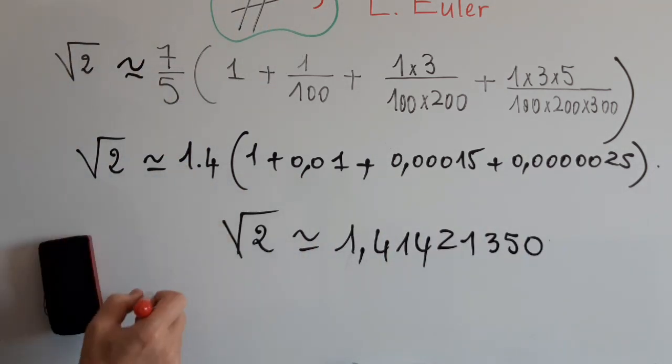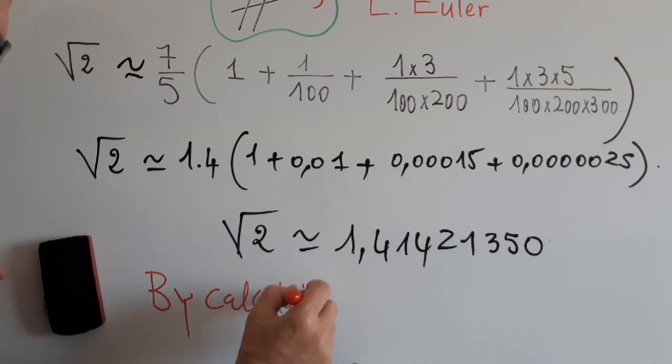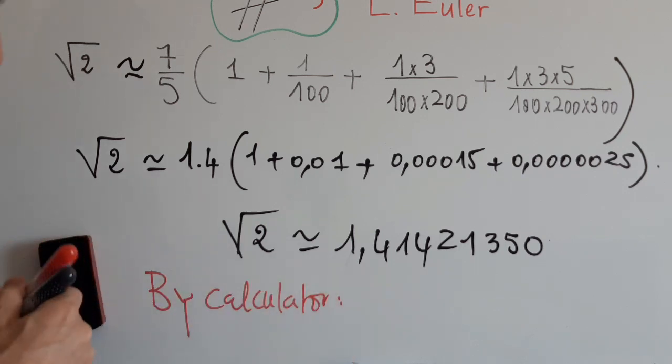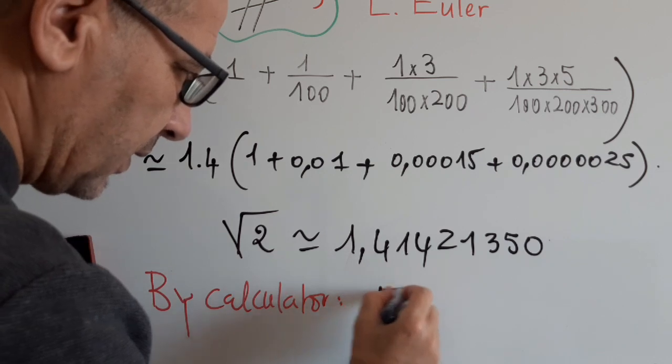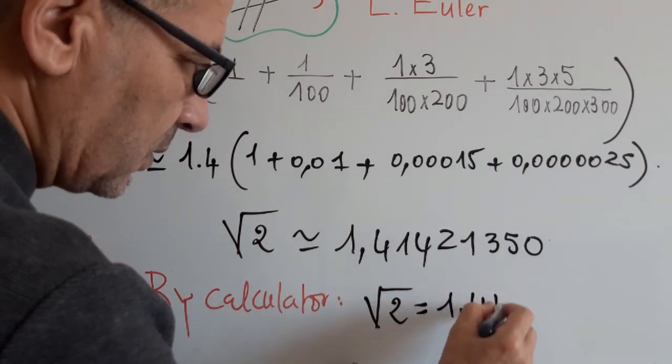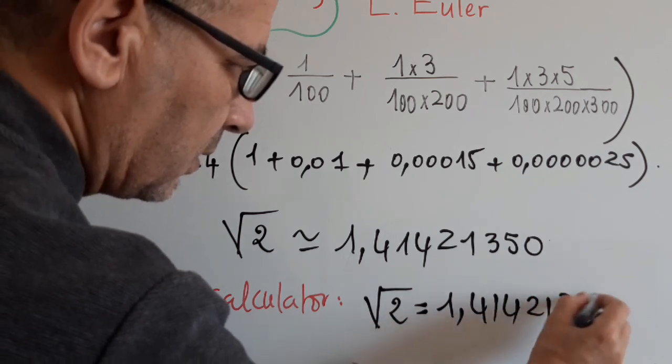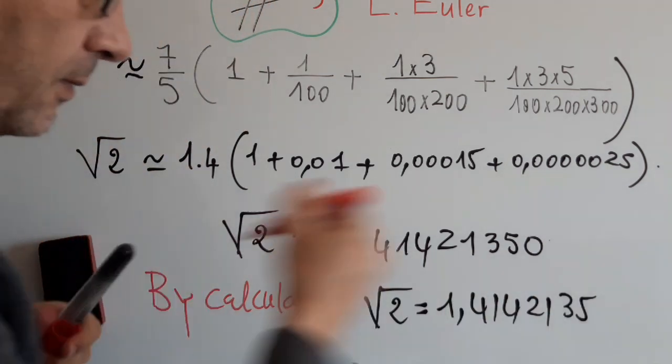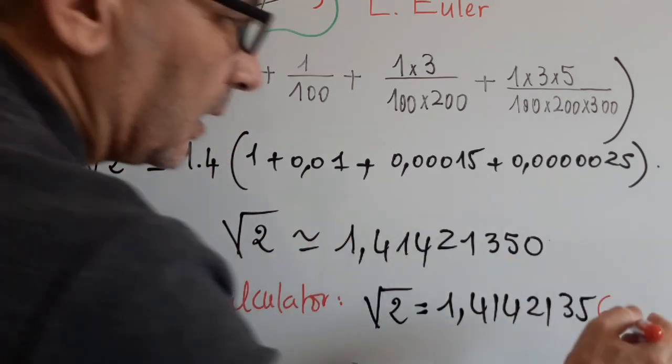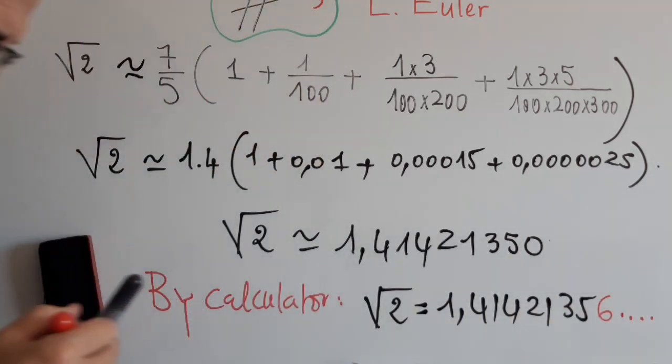Now, by calculator, you will find 1.41421356 and other digits. So we can consider that it is a better approximation of square root of 2.